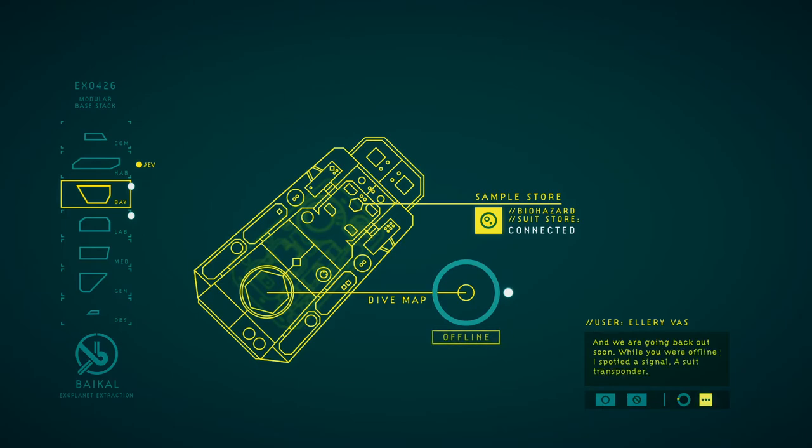For any logged creatures, I'll also put sample requests in their taxonomy entries. To fulfill these requests, just find and transfer the samples to the lab, then analyze them. I can then use that data to add to the creature's study. Head down to the lab level and take a look. I'll also mark sample requests on the dive map. That way we can grab key samples for our studies while we are out in the ocean. And we are going back out soon. While we were offline, I spotted a signal, a suit transponder. You can see its location on the dive map. I want to find it. A suit transponder means a suit, and a suit means Mina. I'll need your help. That suit takes both of us to pilot. And it's the only one I've got. Once you're done exploring the base, load into the dive map. You can head out from there.